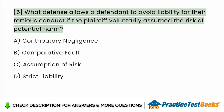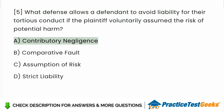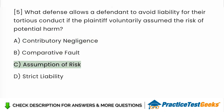What defense allows a defendant to avoid liability for their tortious conduct if the plaintiff voluntarily assumed the risk of potential harm? a. Contributory negligence. b. Comparative fault. c. Assumption of risk. d. Strict liability. Answer: c. Assumption of risk.